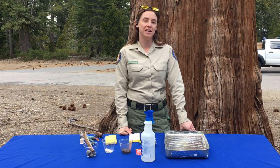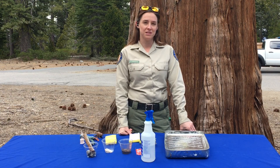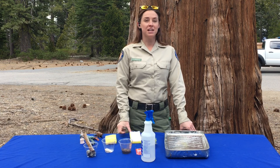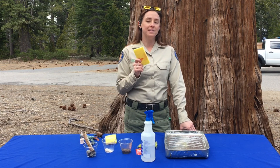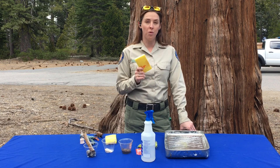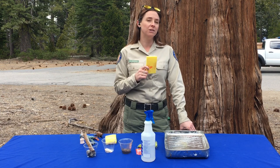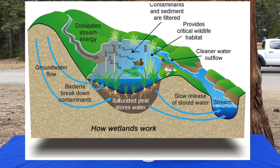Wetlands are very important ecosystems. Just like your kitchen sponge at home, wetlands soak up water and also can slowly release it. And they are super important for keeping our bodies of water like lakes, rivers, and oceans clean and clear because they can absorb sediment, nutrients, and pollution.